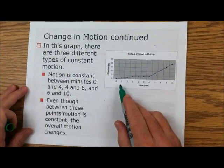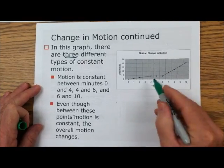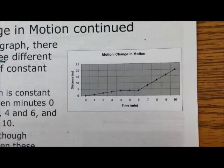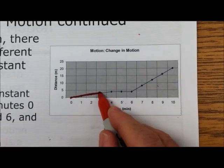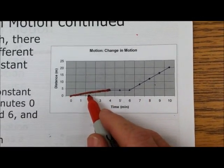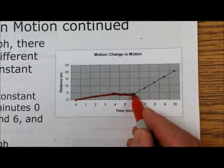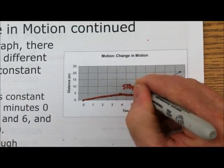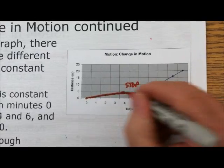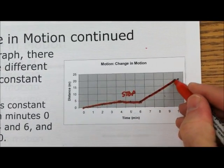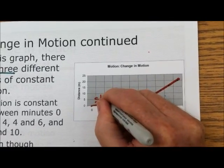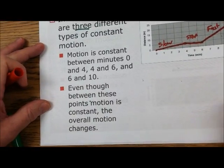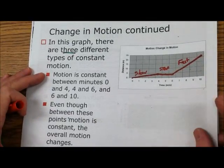To sum up this graph, there are three different types of motion. We start out moving slowly, then it's straight — so we know it's stopped, because we're not moving and it stays at the same point. But then it goes faster. So we got a slow change, then a stop, then a fast change in motion — those are changes in motion, not necessarily constant.